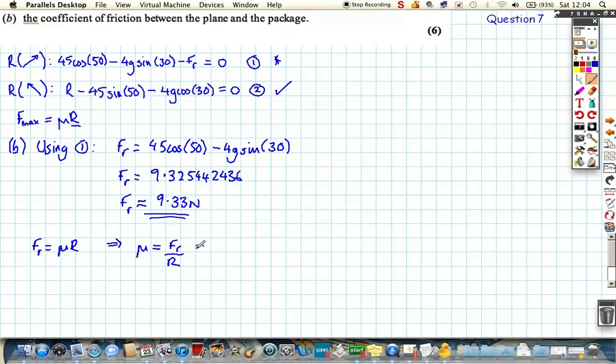And we should get 0.1362966348, which now we can round because we've used the full answers, which is approximately equal to 0.136 to three significant figures. Now there's no units of coefficient of friction—that's just the final answer as it is. Finish.